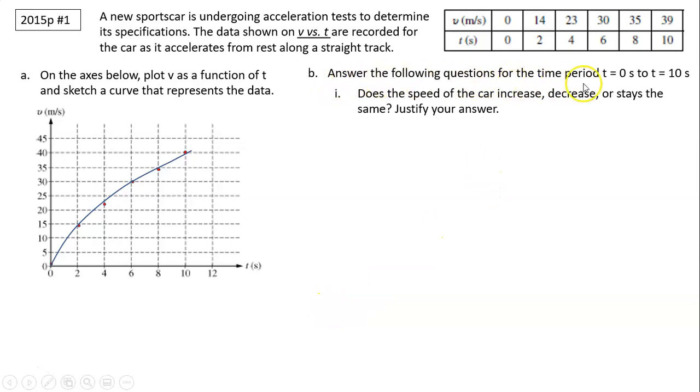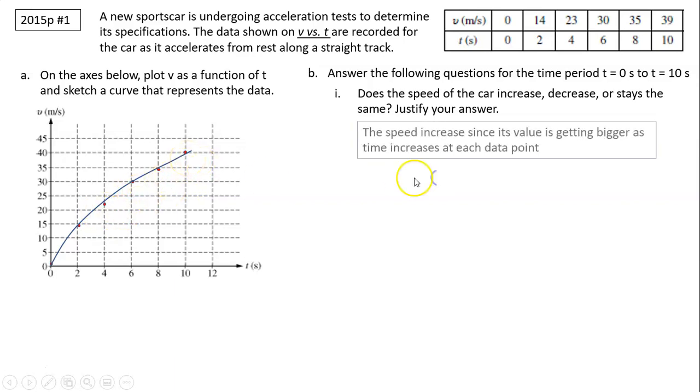Part B asks the following questions for the time period t equals 0 seconds to t equals 10 seconds. Part i: Does the speed of the car increase, decrease, or stay the same? Justify your answer. From the graph we can see v is increasing. The speed of the car is increased because its value is getting bigger as time increases at each data point.